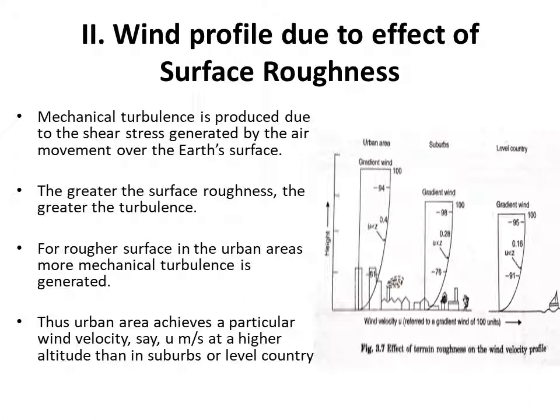In suburbs the number of buildings is comparatively less and the height of the buildings is also comparatively less, so the obstruction to the path of wind is also less. In rural areas the buildings are fewer, and even if they exist they are either single-storied or maximum double-storied, so they obstruct the passage of wind even less. Mechanical turbulence is produced due to the shear stress generated by the air movement over the earth's surface, and greater the surface roughness, the greater will be the turbulence.